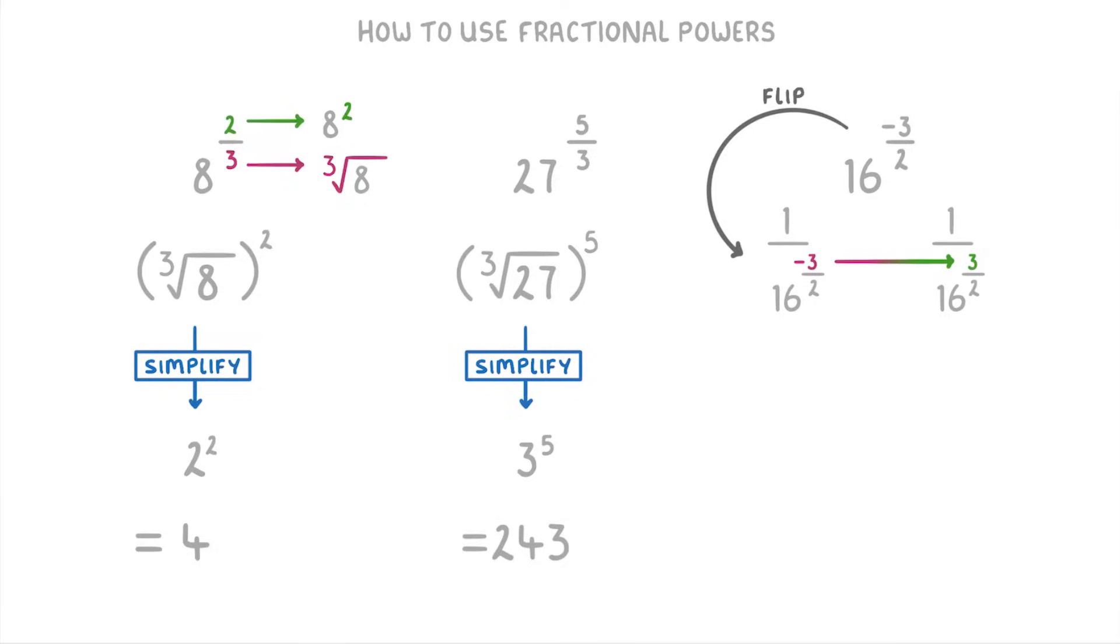So basically, this means exactly the same thing, but it now has a positive power, which makes it easier to work with. We can use the same technique as before: 1 over the square root of 16 cubed, which simplifies to 1 over 4 cubed, or just 1 over 64.